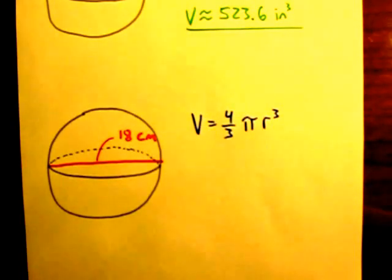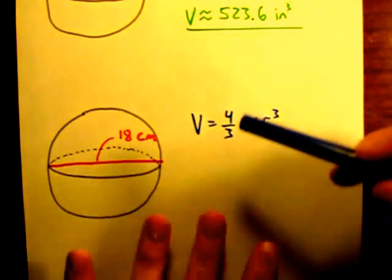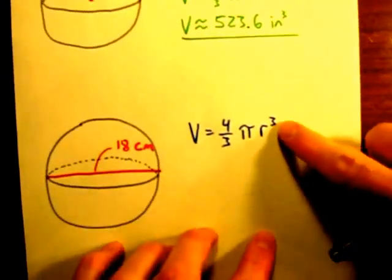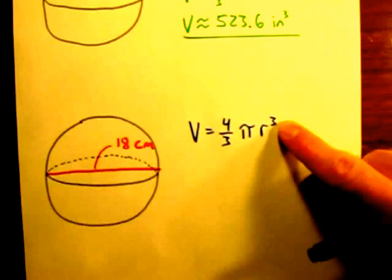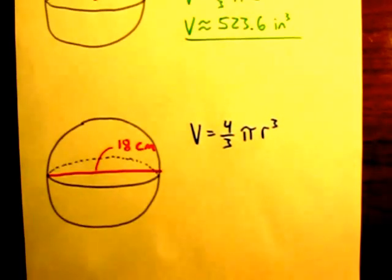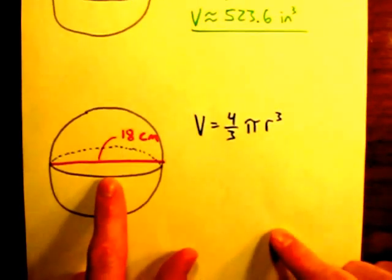One trick, one common error I mentioned in the last problem was forgetting to raise this radius to the third power and accidentally doing it to the second power. So that's one thing you have to keep in mind.